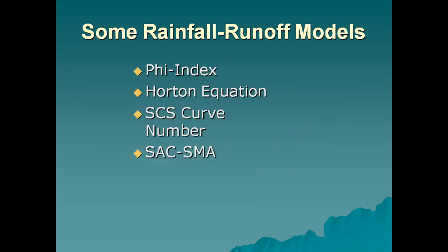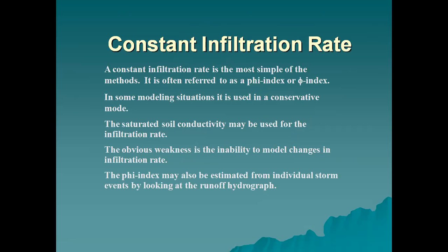Rainfall runoff models include the Phi index, Horton equation, SCS curve number, and SCS/NRCS SMA. A constant infiltration rate, also referred to as the phi index or pi index, is the most simple method. The saturated soil conductivity may be used for the infiltration rate. The obvious weakness is the inability to model changes in infiltration rate. The phi index may also be estimated from individual storm events by looking at the runoff hydrograph.